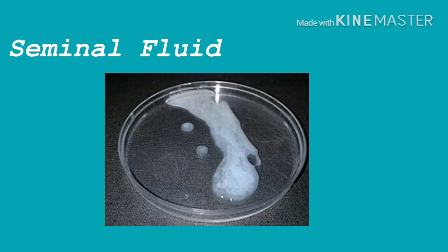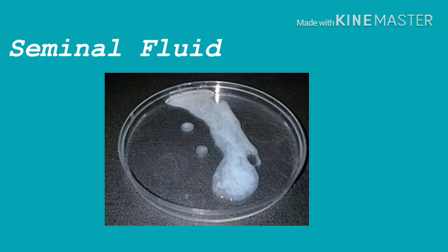Seminal fluid, or semen, is a slightly alkaline mixture of sperm cells and secretions from the accessory glands. Secretions from the seminal vesicles make up about 60% of the volume of semen, with most of the remainder coming from the prostate gland. The volume of semen in a single ejaculation may vary from 1.5 to 6.0 ml, and there are usually between 50 to 150 million sperm per milliliter. Sperm counts below 10 to 20 million per milliliter usually present fertility problems. Although only one sperm fertilizes the ovum, it takes several million sperm in an ejaculation to ensure fertilization.